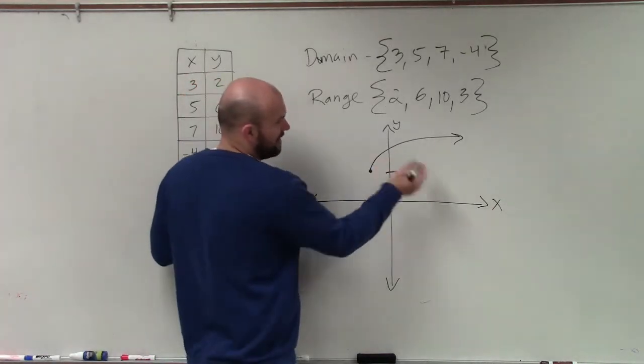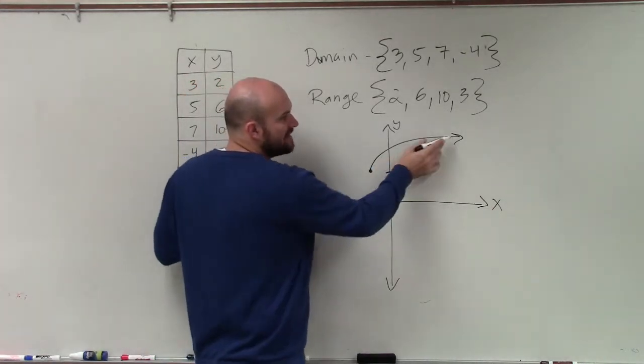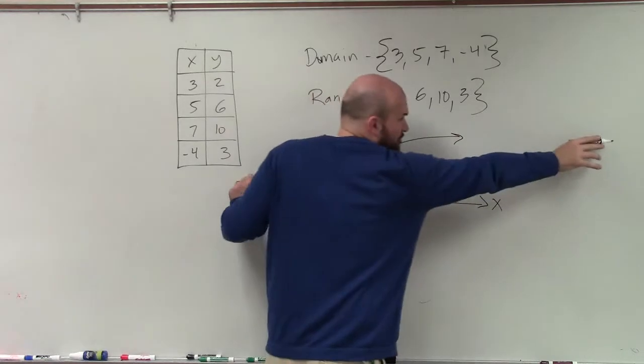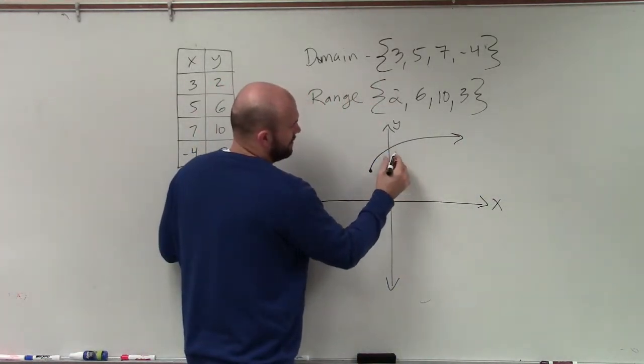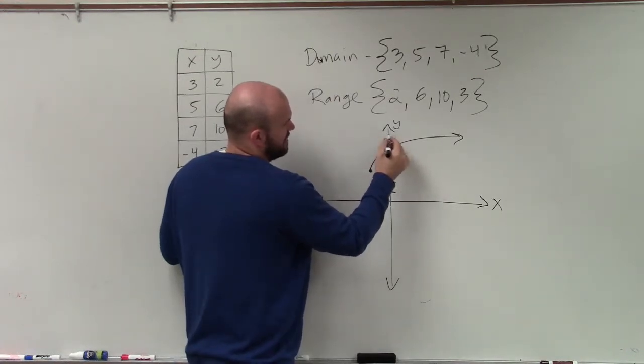But now when we have a graph, remember these arrows, that says this graph goes to infinity. It never stops, right? So 1, 2, 3, 4, 5, 6, 7, 8.